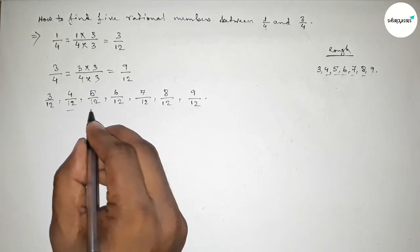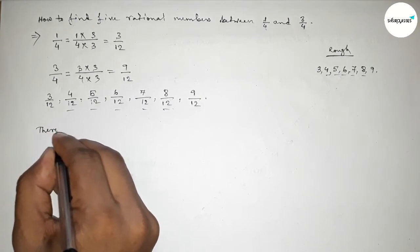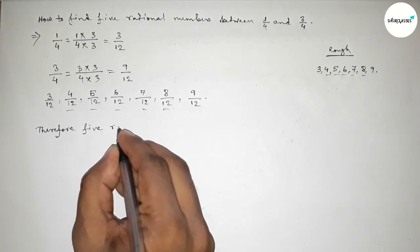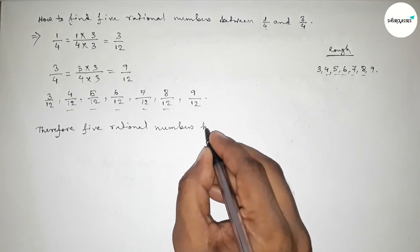Therefore, 5 rational numbers between 1 over 4 and 3 over 4 are: